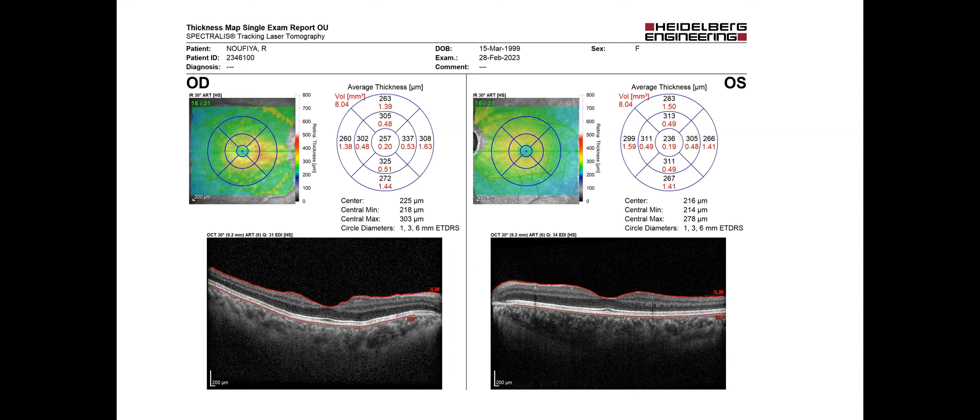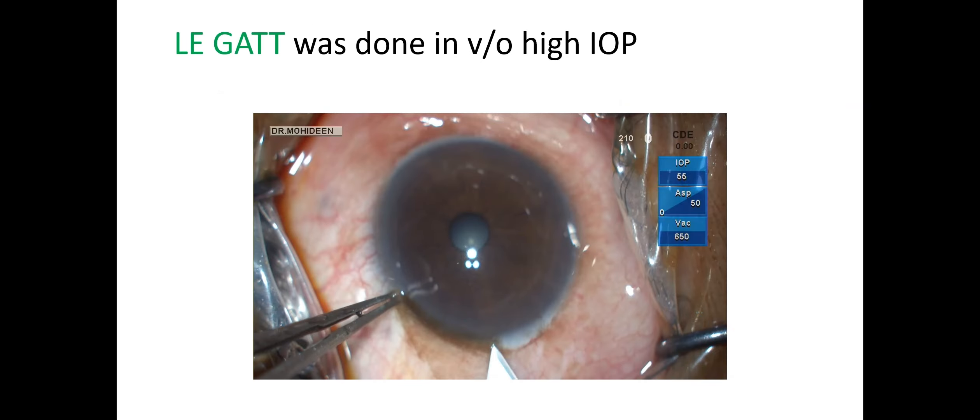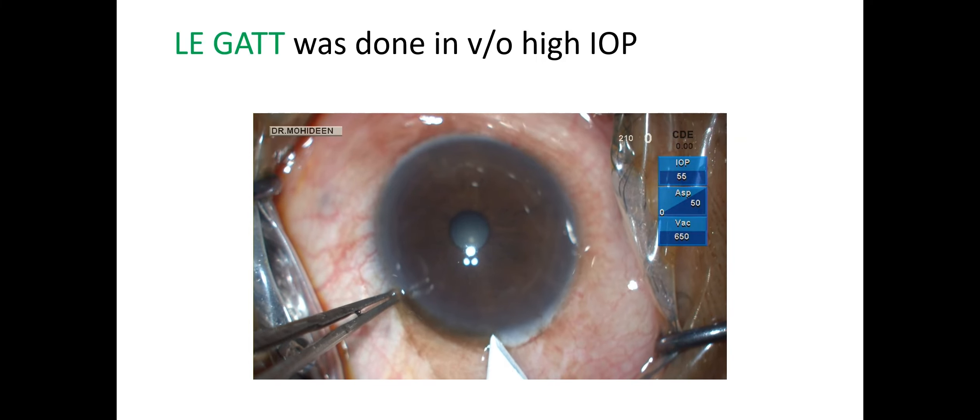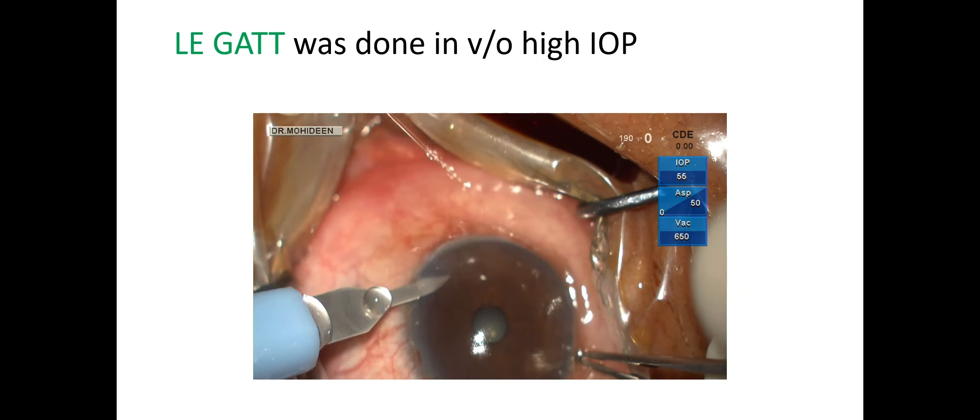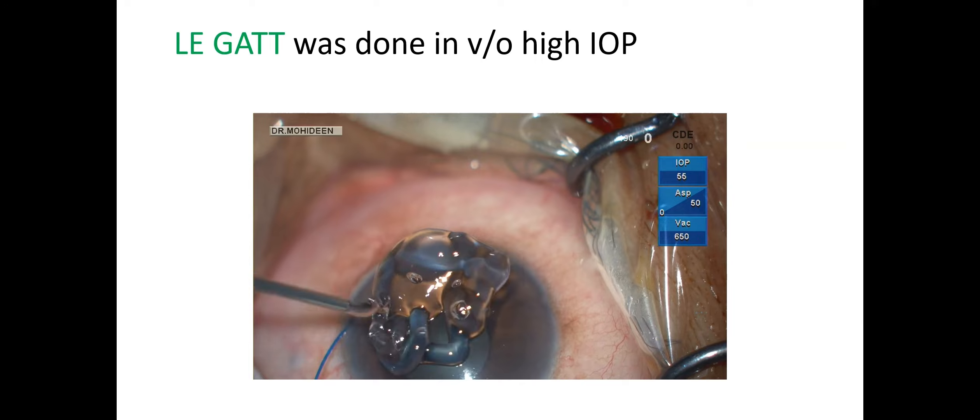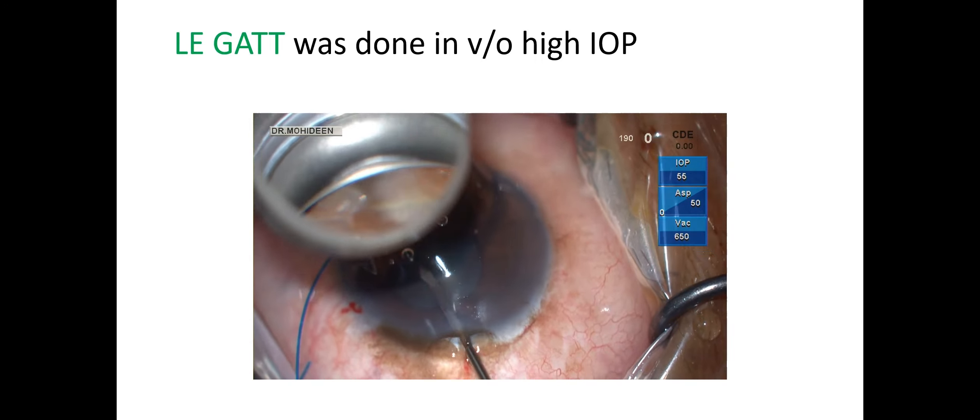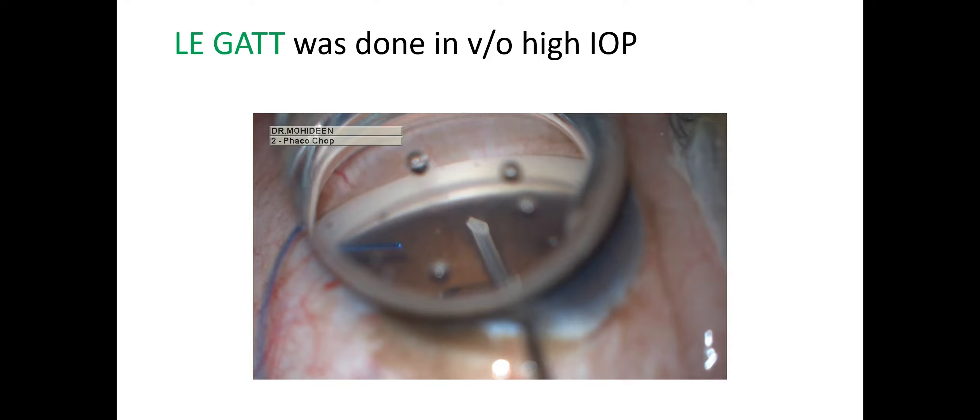This is the OCT picture showing hypotonic maculopathy in the patient. So what to do next in the left eye? For the left eye, the patient was planned for gonioscopy-assisted transluminal trabeculotomy considering the high intraocular pressure and the complication in the right eye.